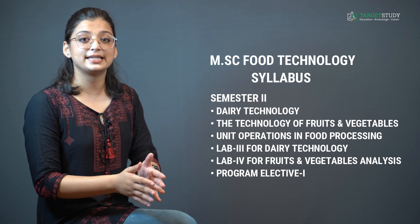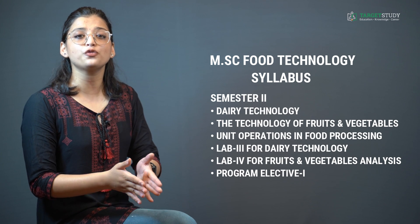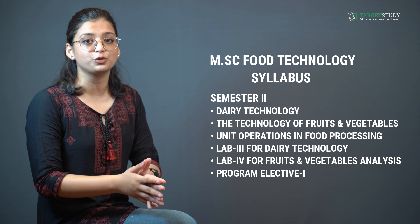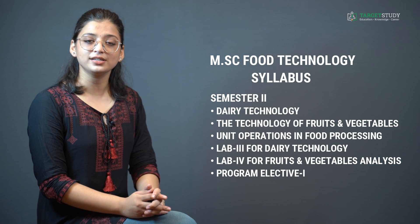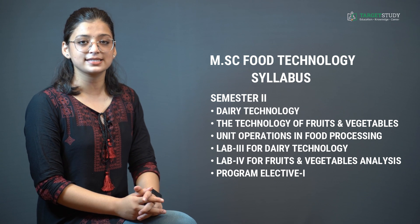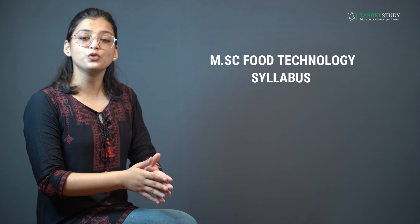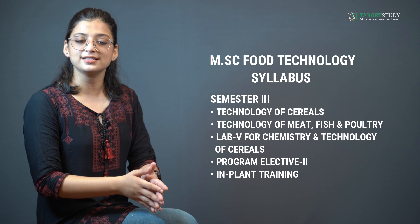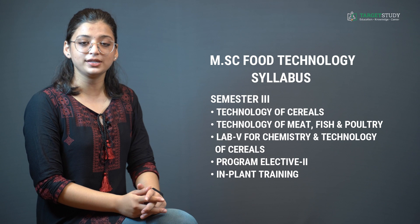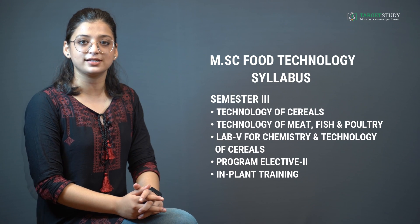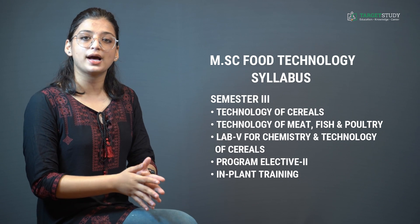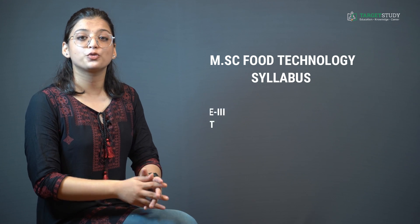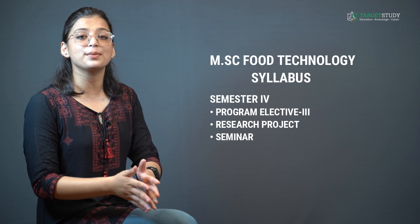Semester 2 consists of subjects like Dairy Technology, Technology of Fruits and Vegetables, Unit Operations in Food Processing, Lab 3 for Dairy Technology, Lab 4 for Fruits and Vegetables Analysis, and Program Elective 1. Semester 3 usually consists of subjects like Technology of Meat, Fish and Poultry, Lab 5 for Chemistry and Technology of Cereals, Program Elective 2, and In-Plant Training. In Semester 4, you study subjects like Program Elective 3, Research Project and Seminar.